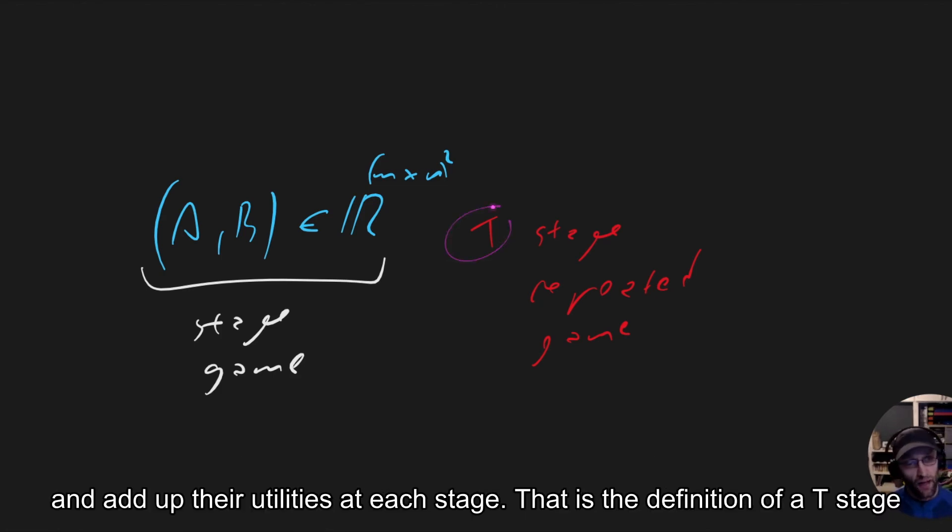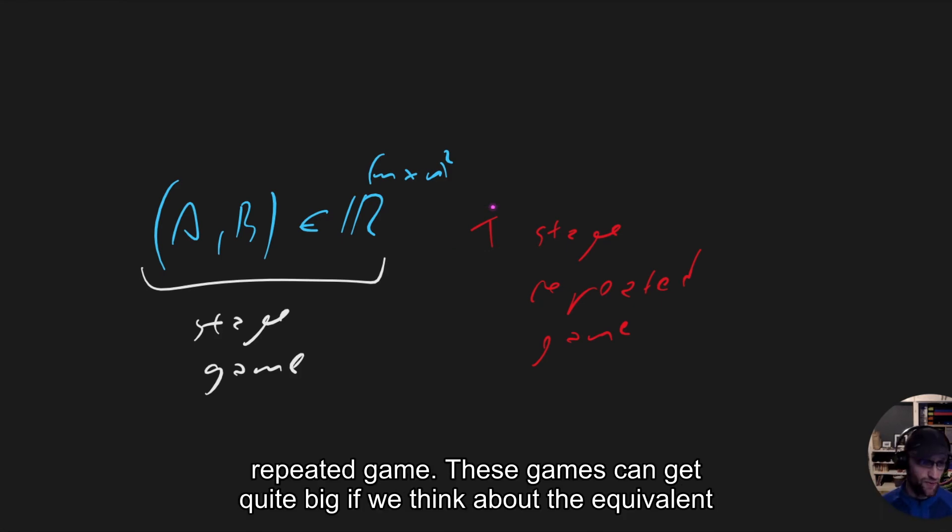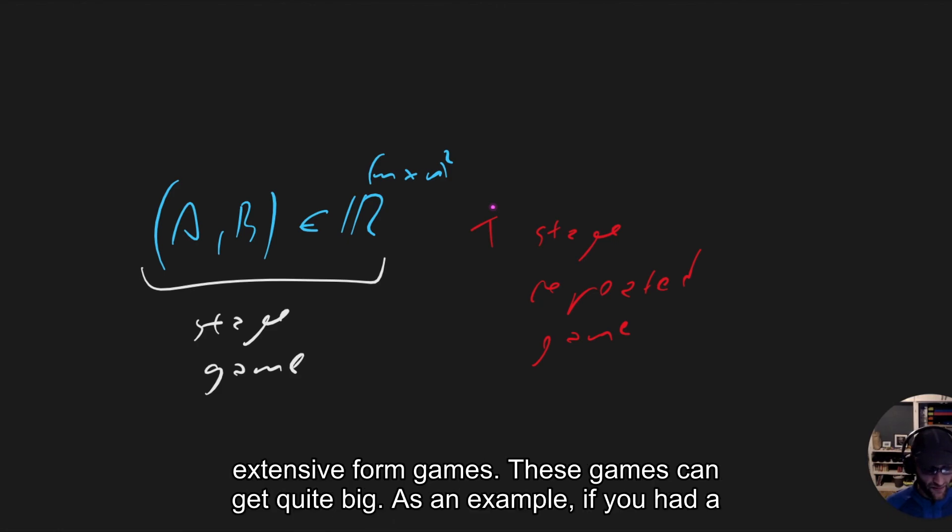They add up their utilities at each stage. That is the definition of a T-stage repeated game. These games can get quite big if we think about the equivalent extensive form games.